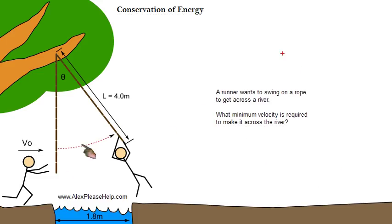A runner wants to swing on a rope to get across a river. What minimum velocity is required to make it across the river?